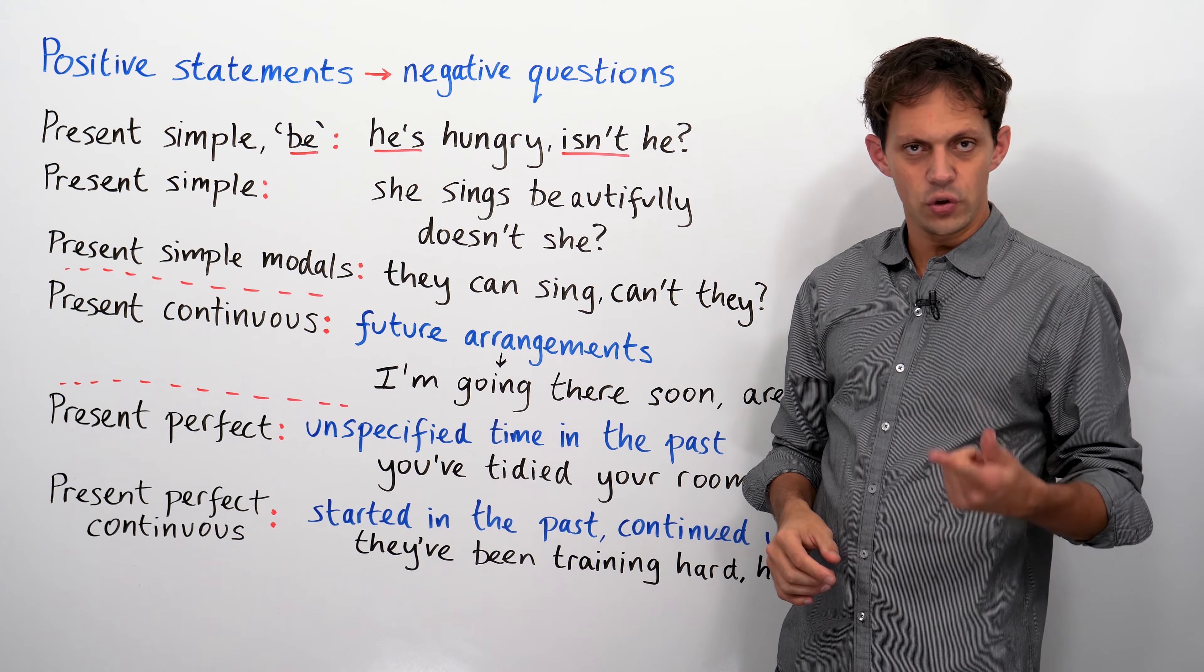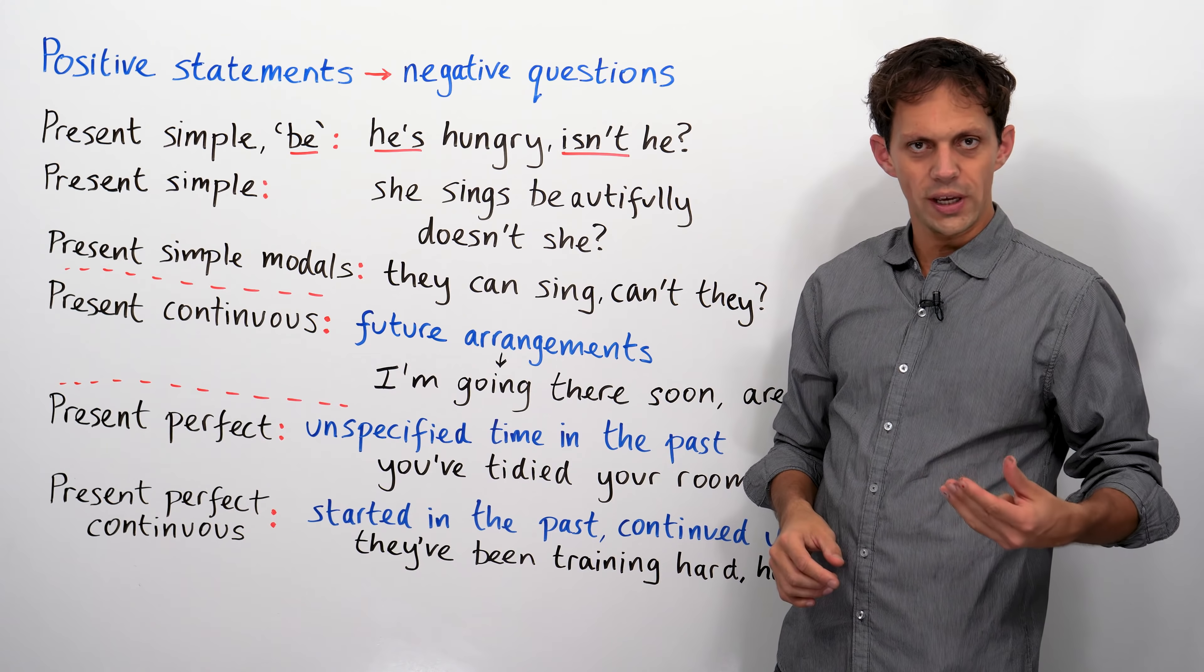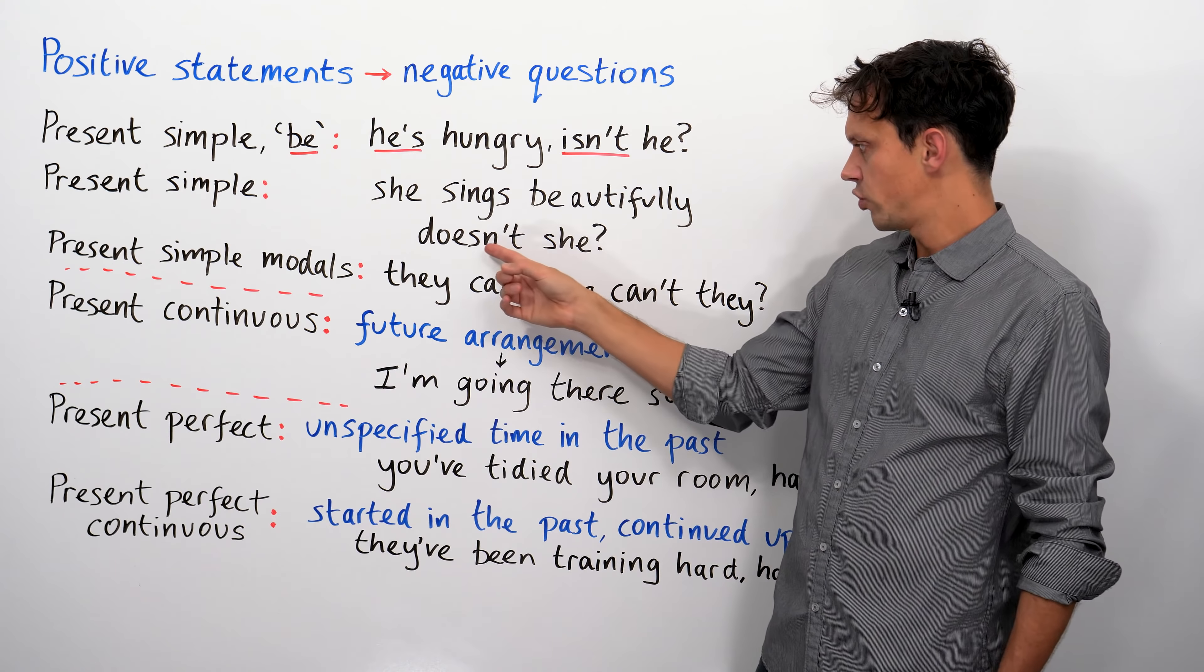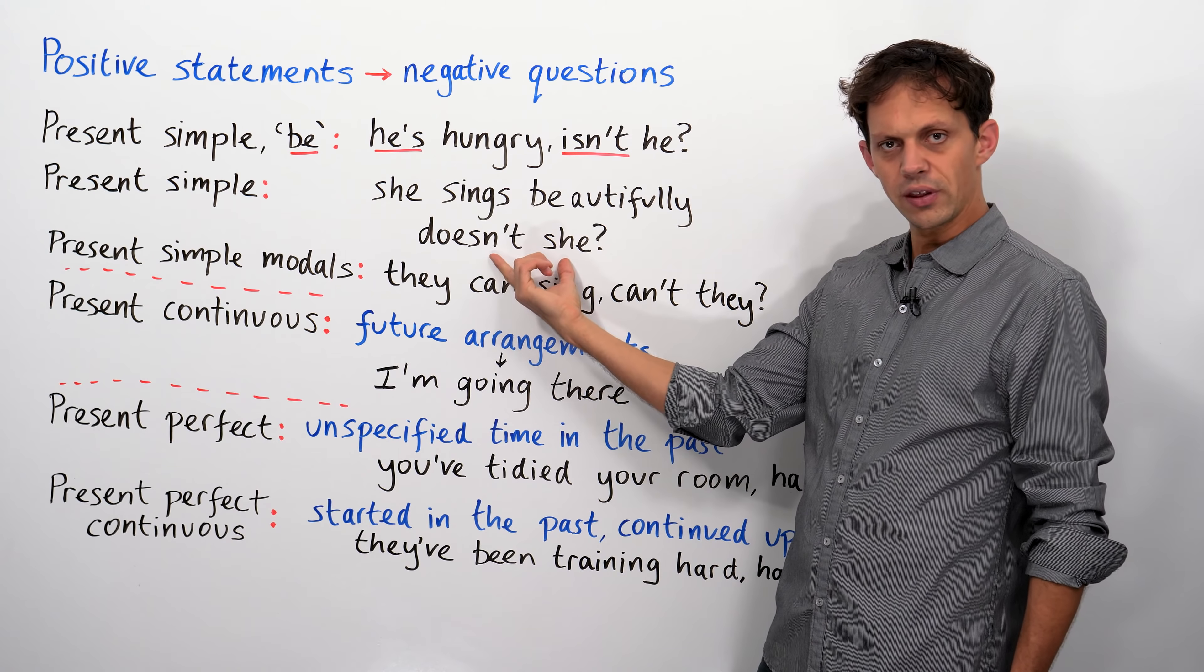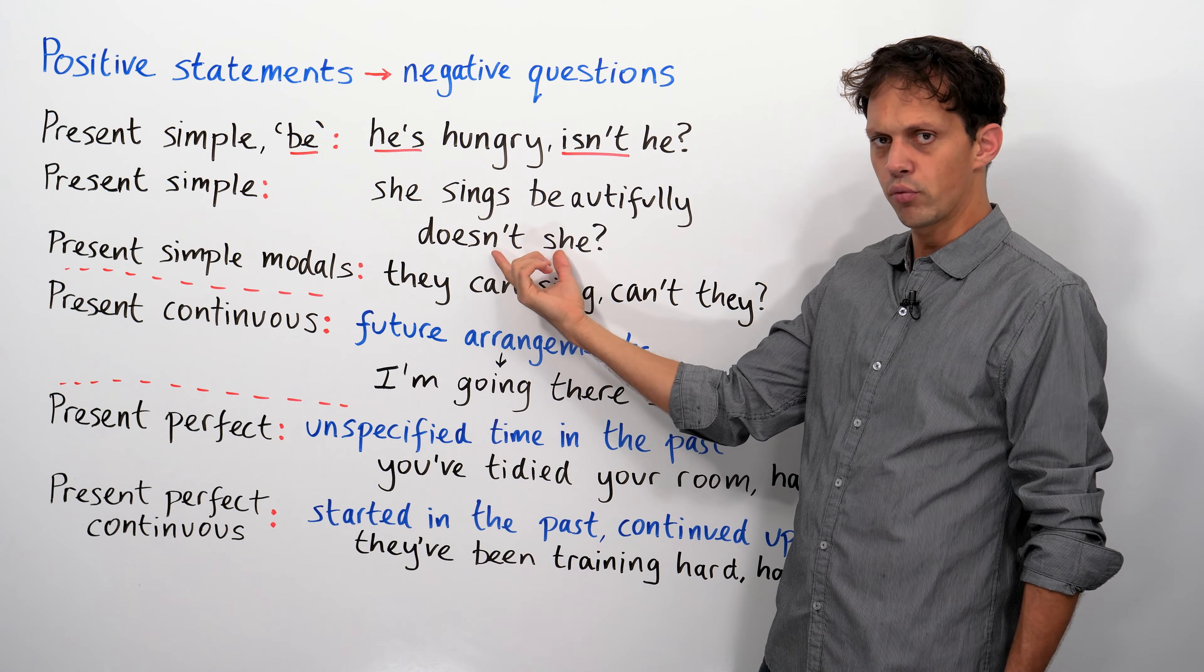So, I do, you do, he, she or it does, we do, you do, they do. Again, the conjugation, you just need to make sure that you have agreement here. That it's in the right form.